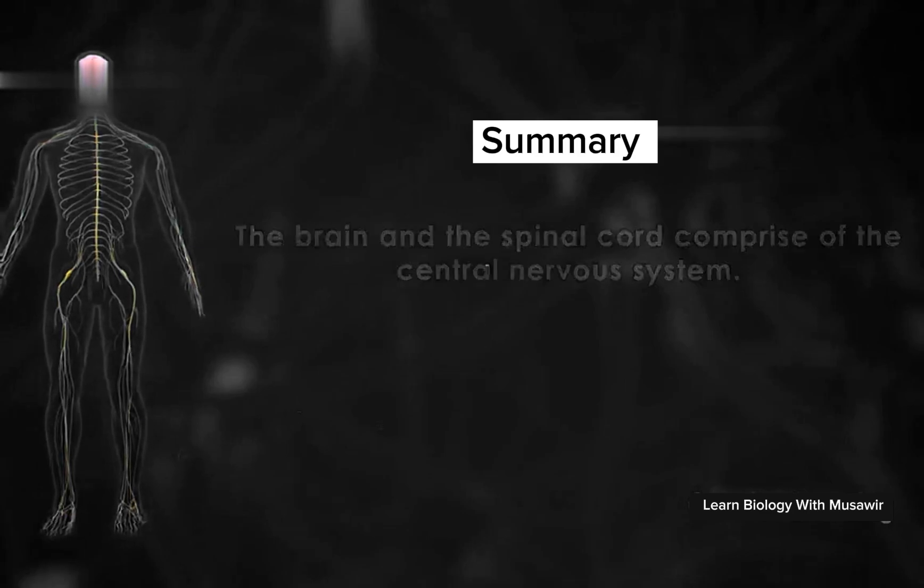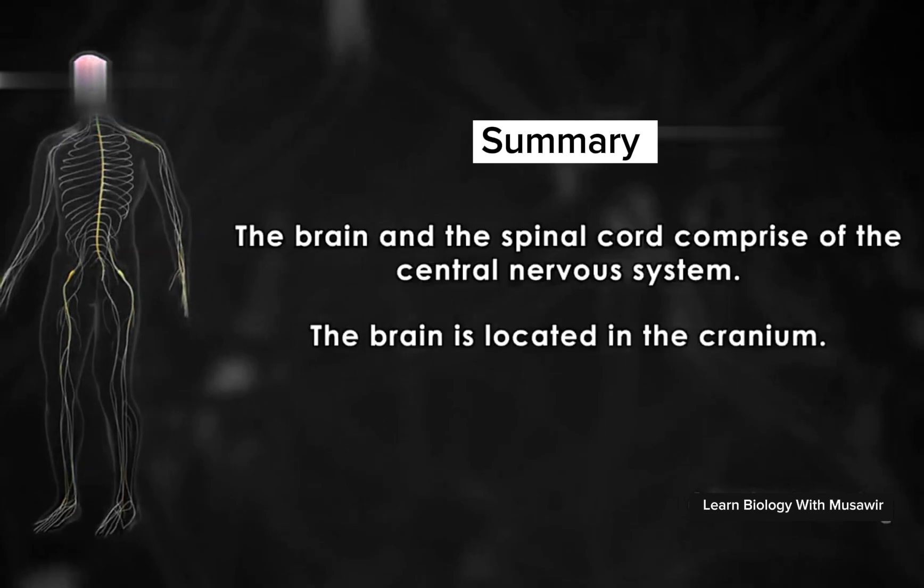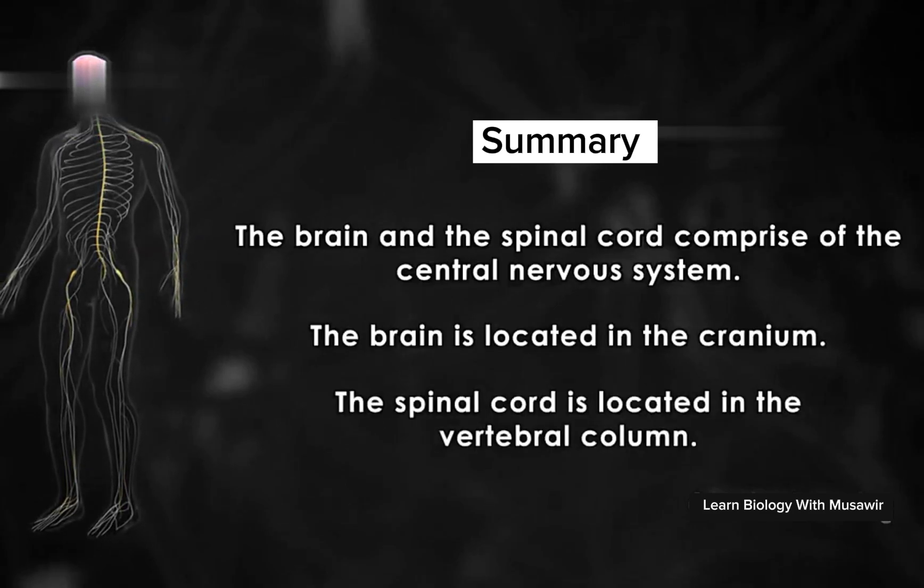Summary: the brain and the spinal cord comprise the central nervous system. The brain is located in the cranium, and the spinal cord is located in the vertebral column.